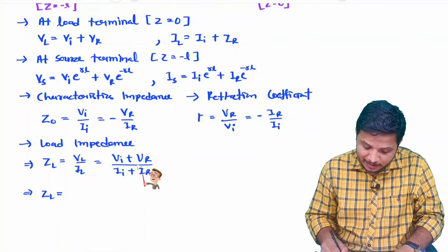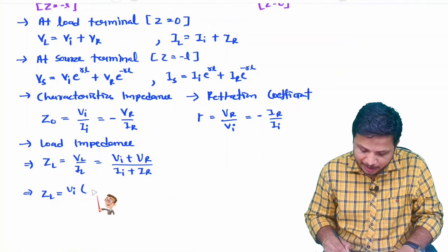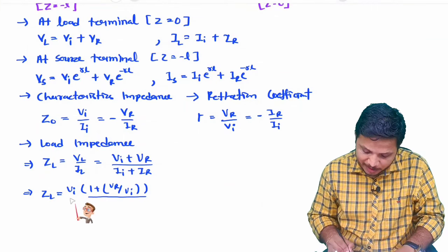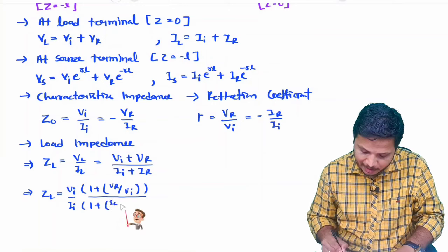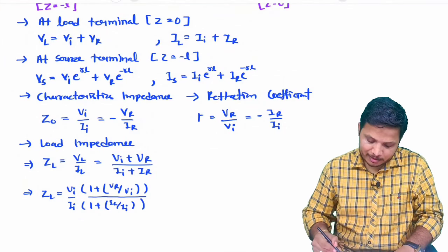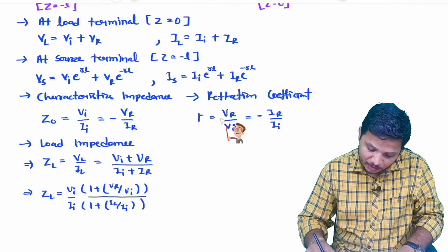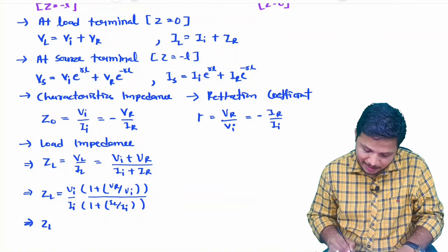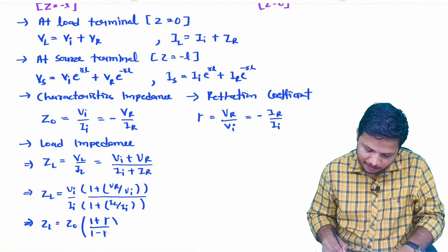From this equation, we take Vi common from the numerator and Ii common from the denominator. The numerator becomes Vi·(1 + Vr/Vi) and the denominator becomes Ii·(1 + Ir/Ii). Now Vi/Ii = Z0 (characteristic impedance), Vr/Vi = ρ (reflection coefficient), and Ir/Ii = −ρ. So ZL = Z0·(1 + ρ) / (1 − ρ).